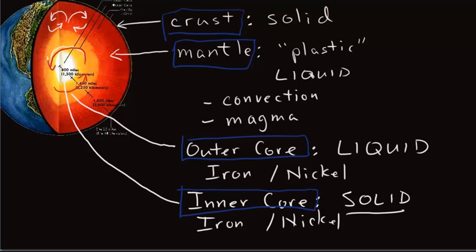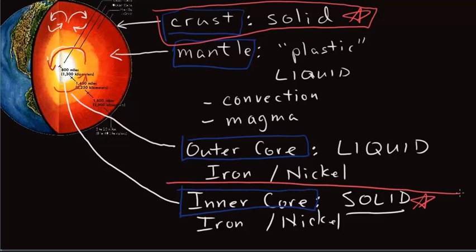And one of the important things to really recognize and remember out of this is which parts are solid. And it's pretty easy to recall because the very outside part, the crust, is solid, and the very inside part, the inner core, is solid.